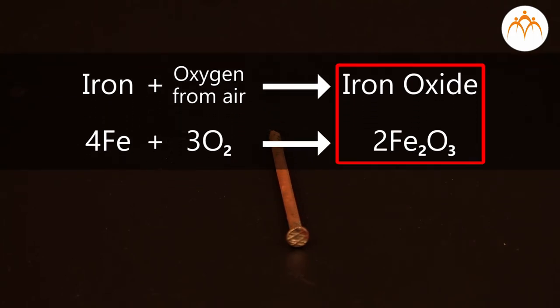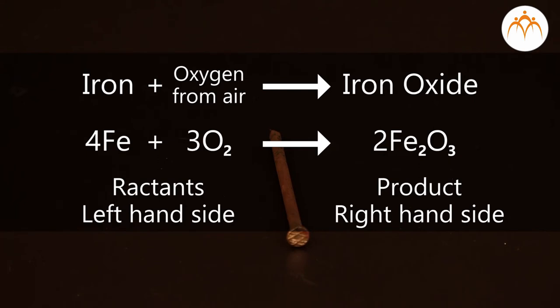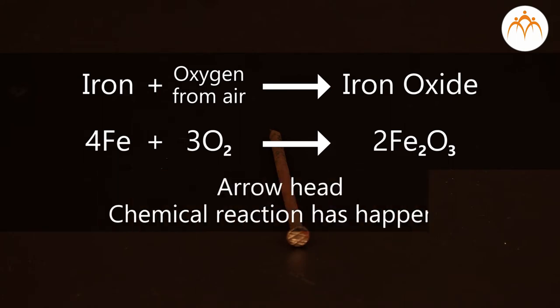As you can see, a new substance, iron oxide, is formed in this reaction. This is written as a product on the right hand side of the arrow. The left hand side indicates reactants that react together to form the products. The arrow head points towards the products of the reaction. Please be aware that chemists use an arrow head to indicate that the chemical reaction has happened.